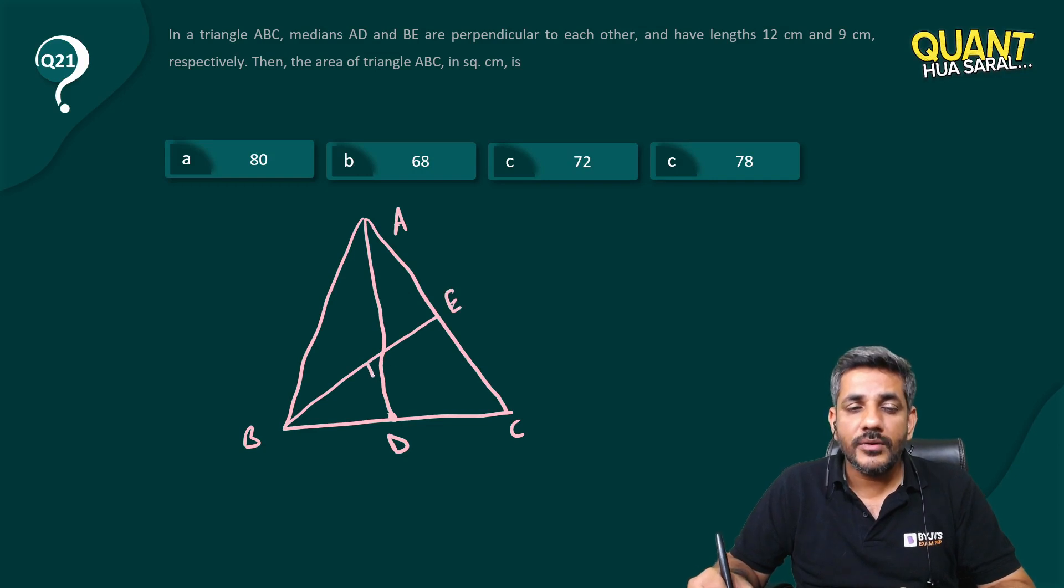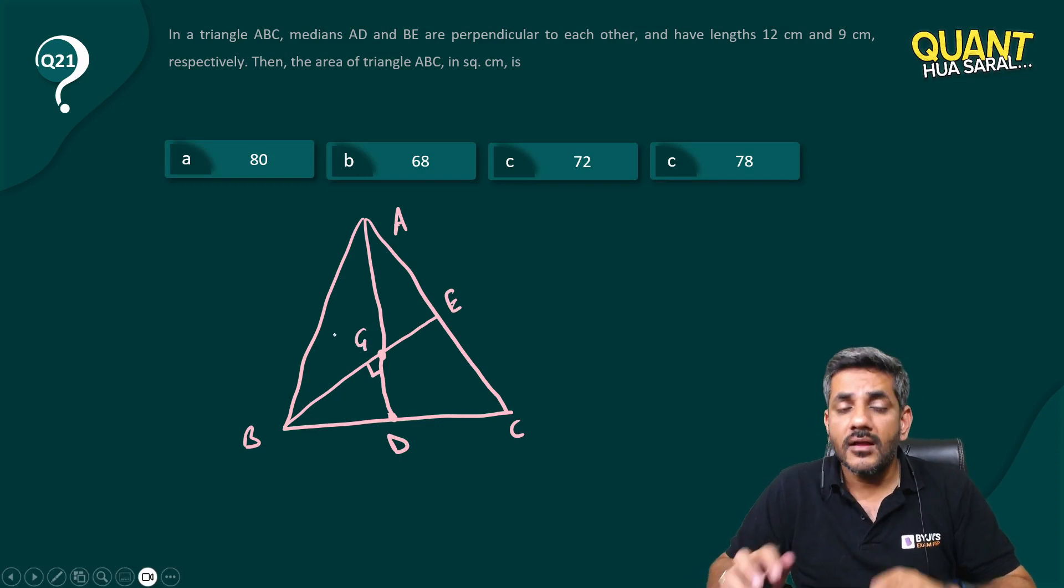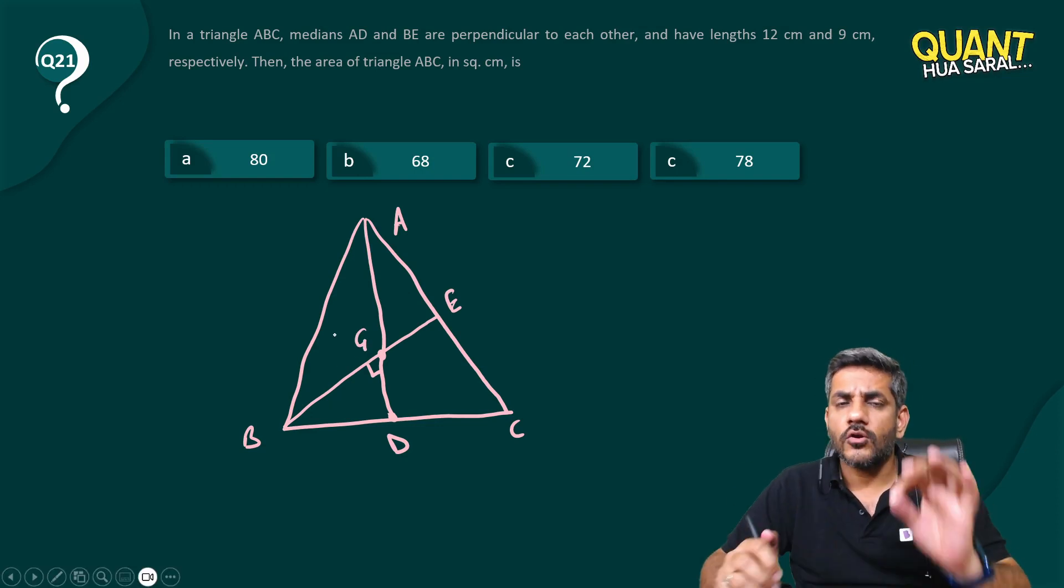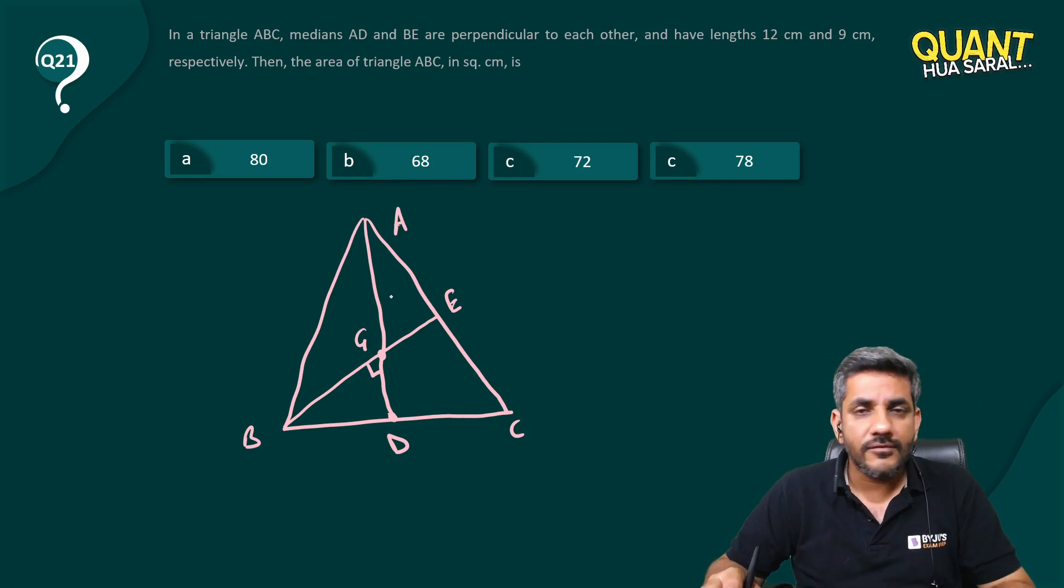That means first of all, wherever the two medians meet, that point is called the centroid. And I'm sure you all know that centroid divides the median in a ratio of 2:1.